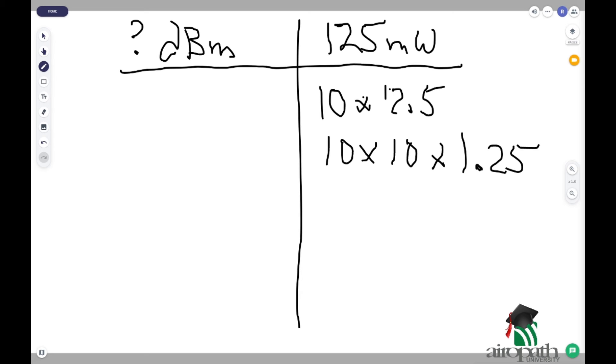Now, this one we can deal with. This is the factorization of 125 milliwatts. So, let's go over to our dBm side. We keep our tens. We add another 10 and then we add a 1 due to our substitution.